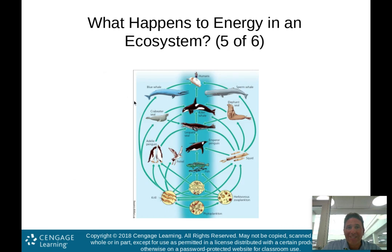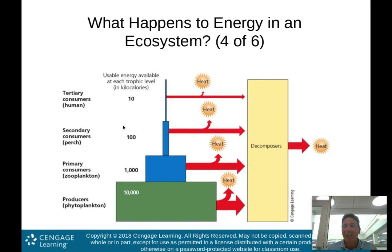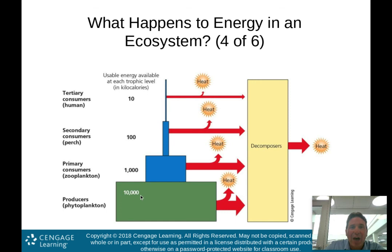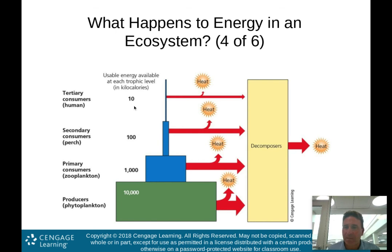When we eat that perch, there's only 10 kilocalories left — only 10% of the energy at the previous trophic level is available at the next higher level. By the time we get to human beings, that 10,000 kilocalorie supply available for the producer is now only down to 10.